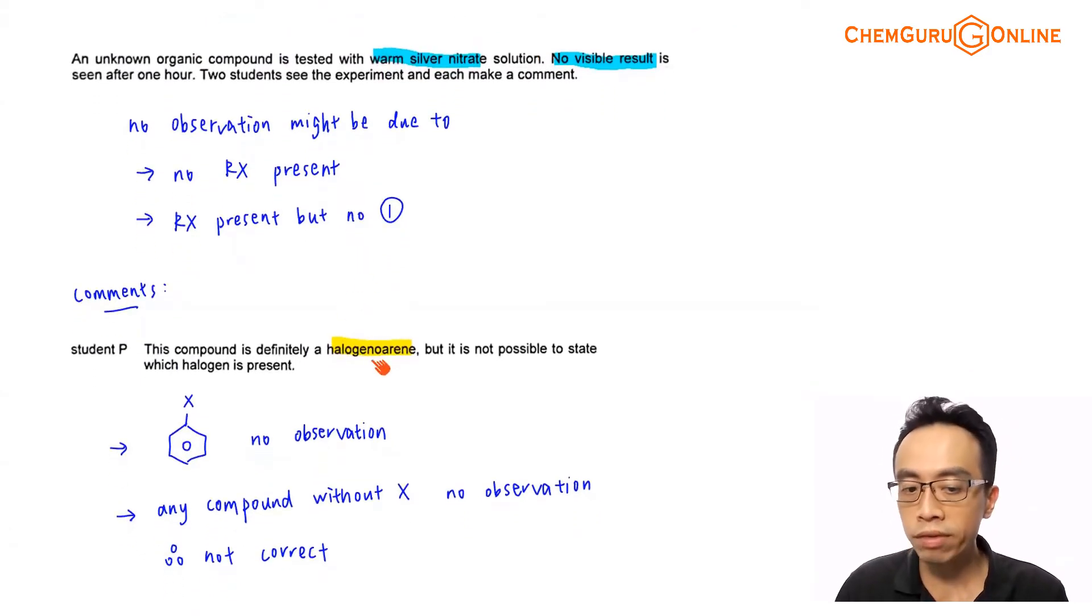Now, Student P says that this compound is definitely a halogenoalkane, but it's not possible for me to state which halogen is present. Now involving halogenoalkane, the most common one that we encounter of course will be halogenobenzene. I know that if you have a halogen attached to benzene, the CX bond is stabilized by resonance and we're not able to break this bond involving nucleophilic substitution. This bond doesn't undergo substitution. I cannot kick out a free halide and there's no precipitation possible. And so if I'm using halogenobenzene, I will not get any observation.